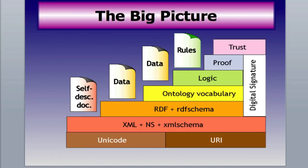Unicode gives a computer number to literally every character for every written language in the world. On top of that Unicode base and naming convention is XML and its schema — the common language that connects everything together. Using XML, the semantic web will use RDF, which are triplets that connect different objects together.